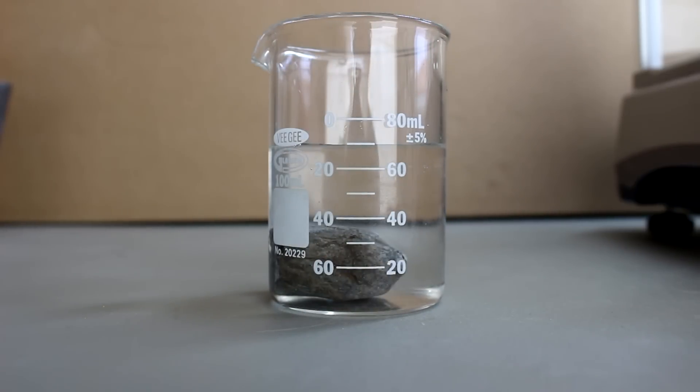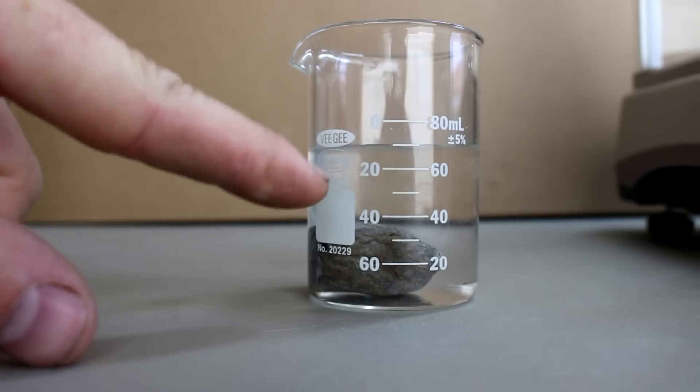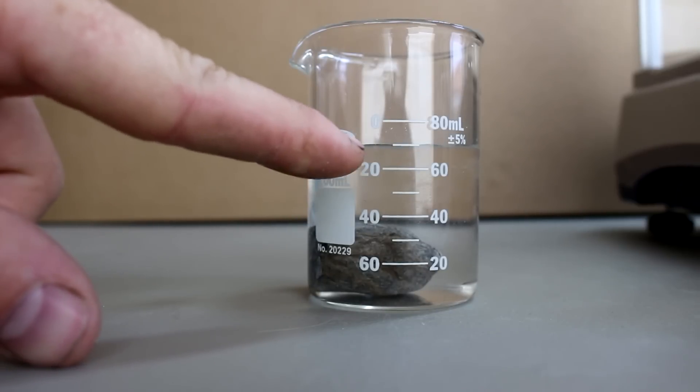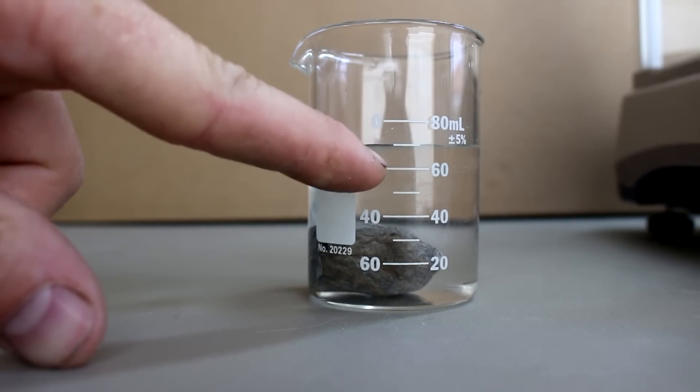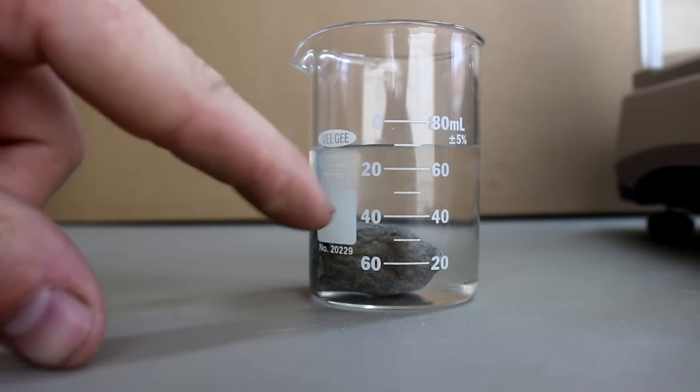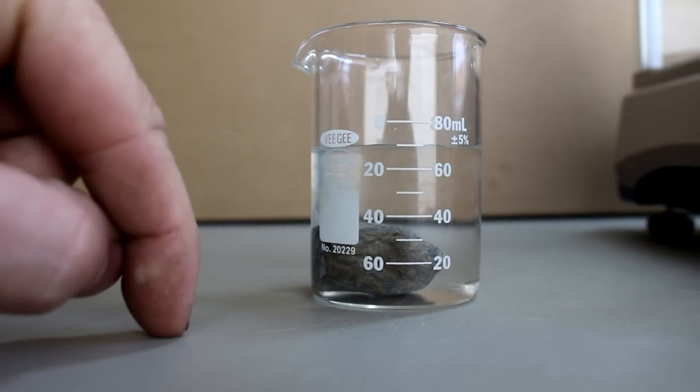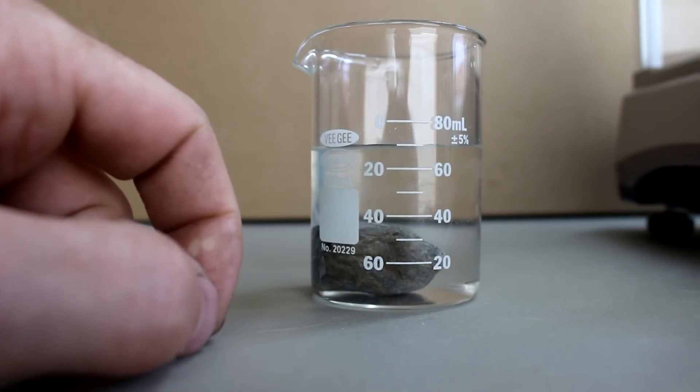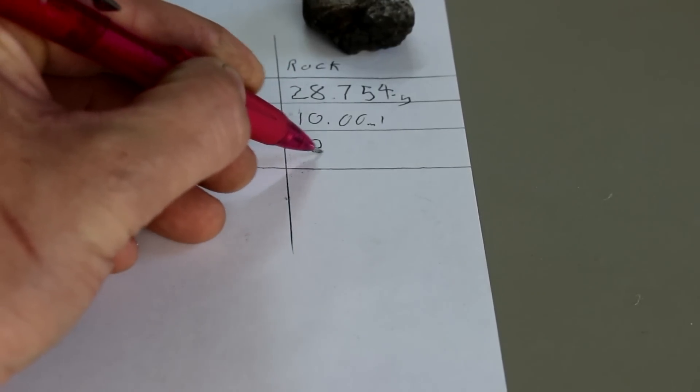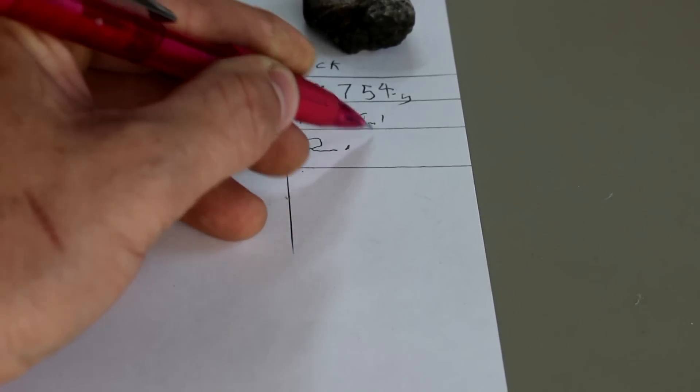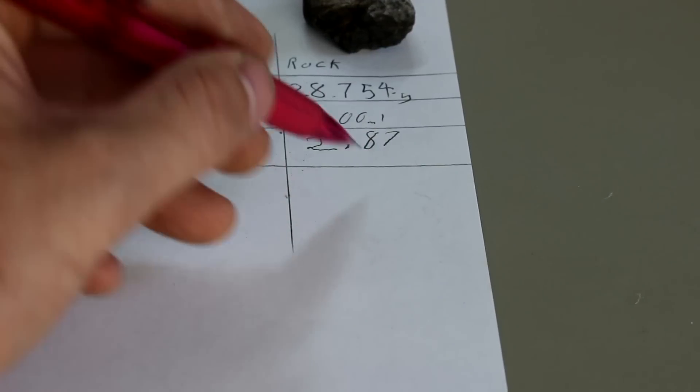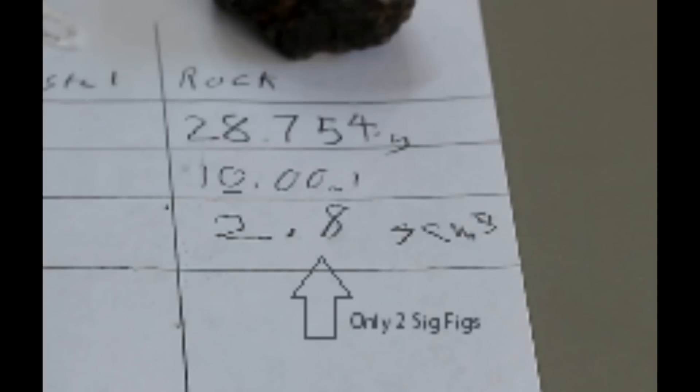The rock is going to displace the water up to an amount which you can then read off is 70 milliliters. So I started at 60, now at 70. That means that the rock's volume is roughly 10 milliliters. Now if I divide its mass by its volume I get 2.8 grams per cubic centimeter. A value which is pretty common for ordinary crustal rocks.